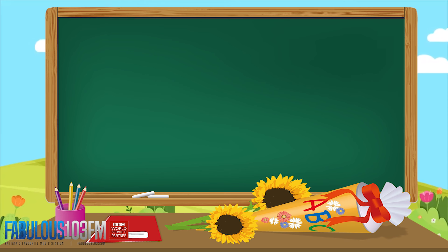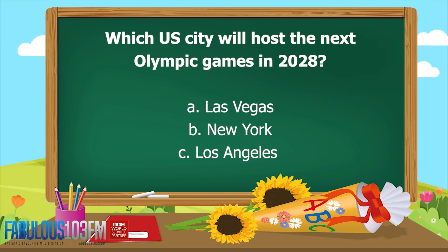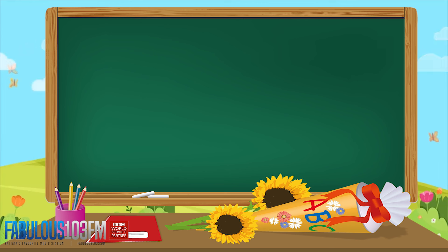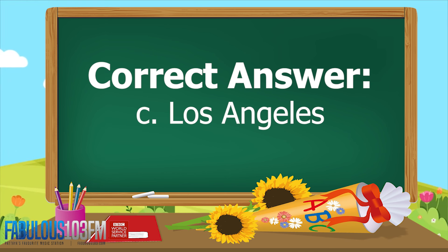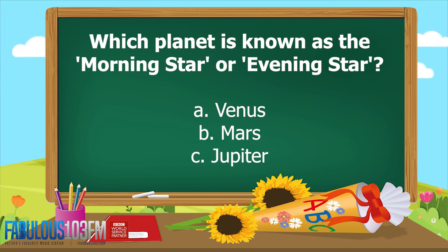The second question yesterday: which US city will host the next Olympic Games in 2028? A) Las Vegas, B) New York, or C) Los Angeles? The correct answer is C) Los Angeles. Now, new questions for today: which planet is known as the morning star or the evening star? Is it A) Venus, B) Mars, or C) Jupiter?